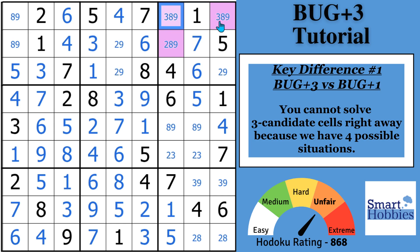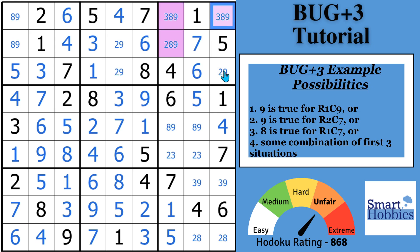What happens is that you can look at this cell, and you go, okay, either this is a 9, and that will break the deadly pattern. Or this is a 9, and it breaks the deadly pattern. Or this is an 8, and it breaks the deadly pattern. That's the way you need to look at it.